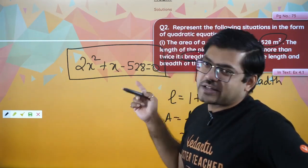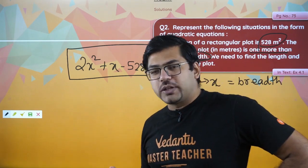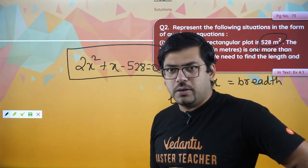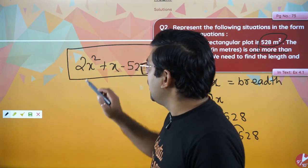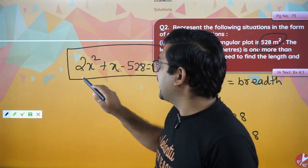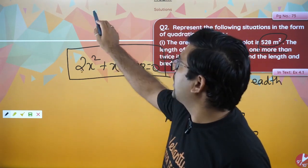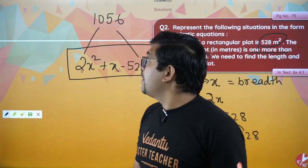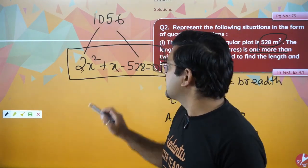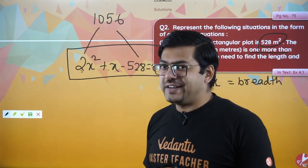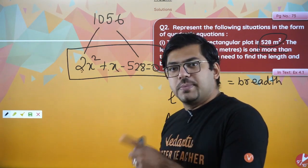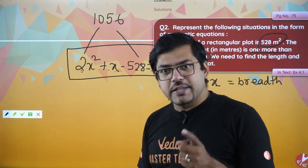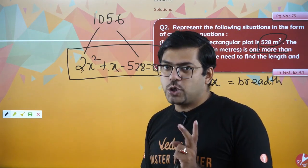Now to solve this equation we can use middle term splitting or the quadratic formula. For middle term splitting, we multiply 2 by 528 to get 1056. We need two factors of 1056 that differ by 1. Doing prime factorization: 1056 equals 2 raised to 5 into 3 into 11, which gives us 32 and 33. Since 33 minus 32 equals 1, these are our factors.